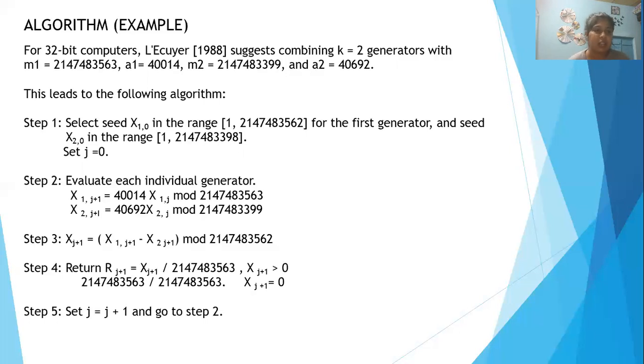Similarly, we calculate the same value for X_2. Step 3 is to calculate the X_j+1 combined value: X_1,j+1 minus X_2,j+1 mod 2147483562, the m_1 value from the previous step.